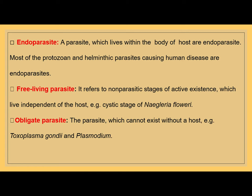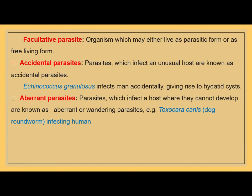Free-living parasites refers to the non-parasitic stage of active existence which live independent of the host. An example is Naegleria fowleri, which has a cystic stage. Another type of parasite is obligate — those which cannot exist without a host, such as Toxoplasma gondii and Plasmodium species. They can't live without their host; there is no survival, so they are known as obligate parasites.